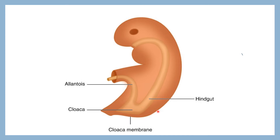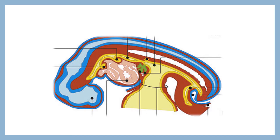This cloacal membrane is a bilaminar membrane which has both endodermal and ectodermal layers. In between these two, there is no invagination of mesodermal cells. Behind the hindgut is the primitive streak. From the primitive streak, the mesodermal cells migrate through this bilaminar membrane, enter into the ventral wall, and this is going to form the infraumbilical part of the abdomen.